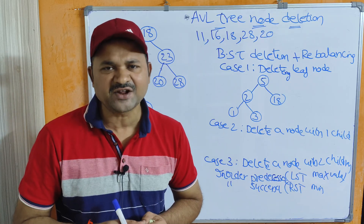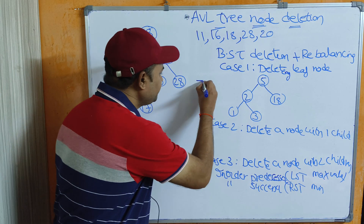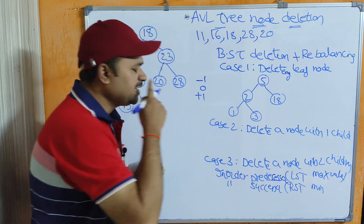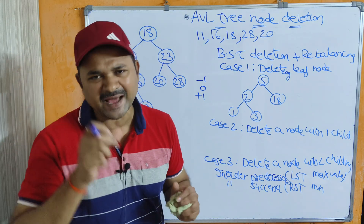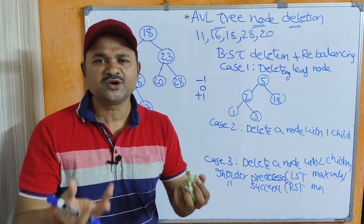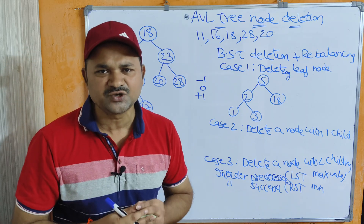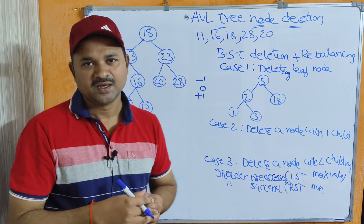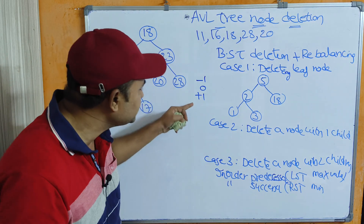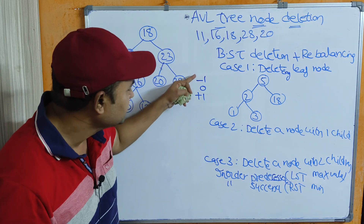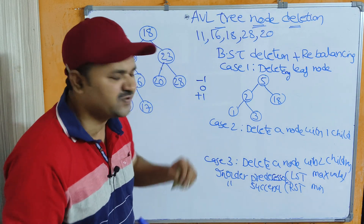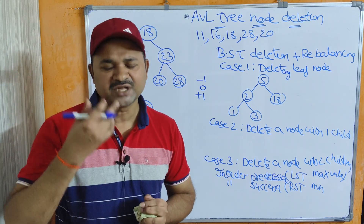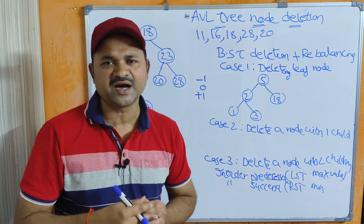If the balance factor of a node is -1, 0, or +1, then we can say that the node is a balanced node. If all the nodes are balanced nodes, then we can say that the tree is a balanced tree. If one of the node's balance factor is other than -1, 0, or +1, then we call that node an unbalanced node, and the tree will become an unbalanced tree.